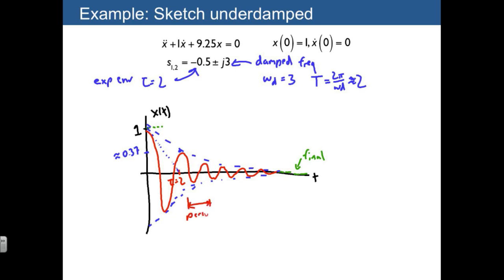The period T is about 2 as well. So this shows us a description of all the information that we need in order to explain how the system is going to respond.